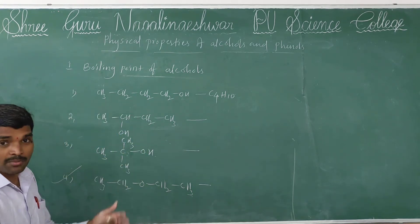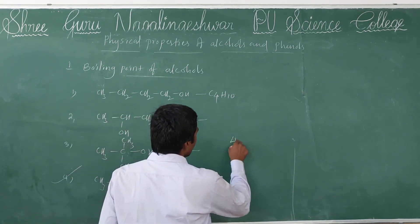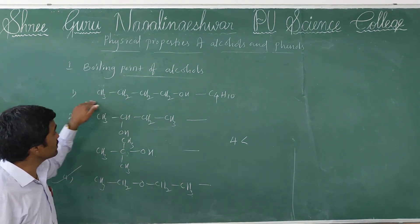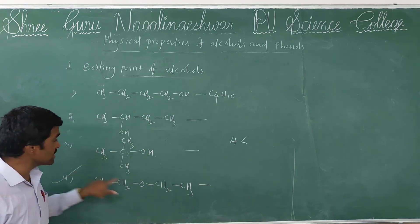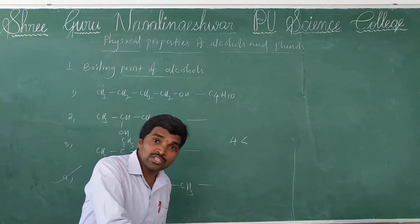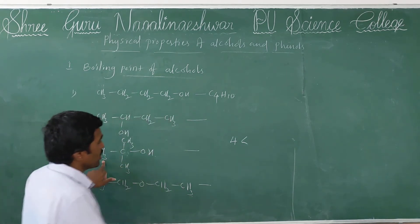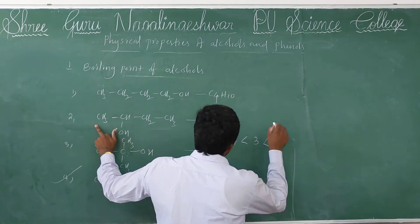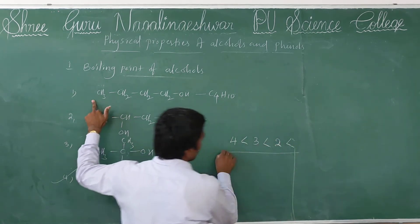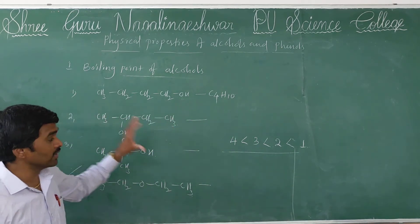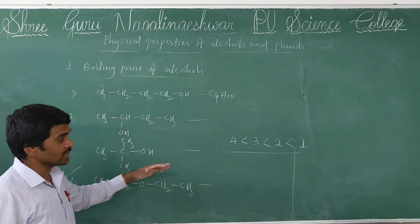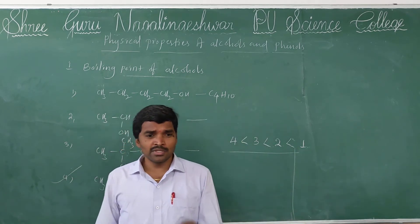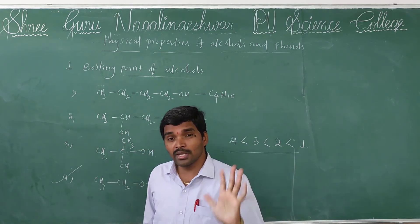Next, write the increasing order of boiling point. Ether is the lowest boiling point. After ether, look here — this is the normal chain, and this is somewhat branched. Branching system increases, boiling point decreases. So after ether, the next lowest boiling point is the third compound — tertiary butanol. Then 2-butanol. Then butanol. Just remember: branching system increases, boiling point decreases — this applies for isomeric alcohols only.